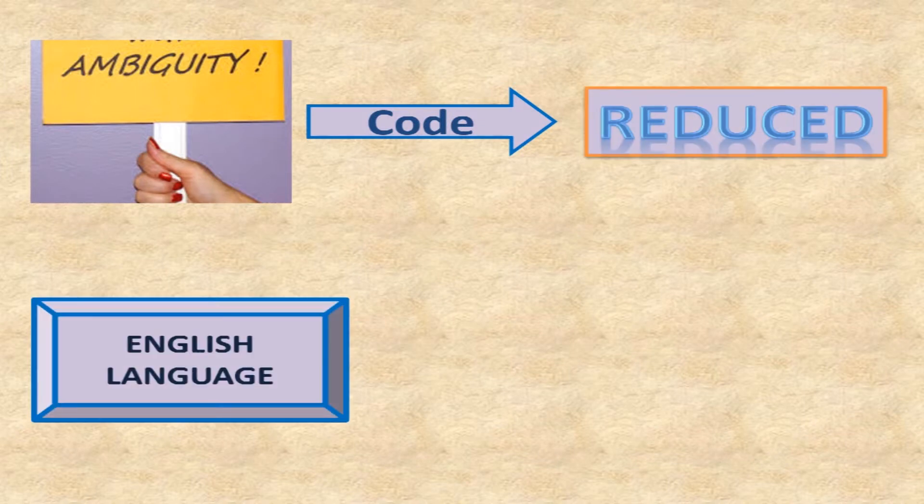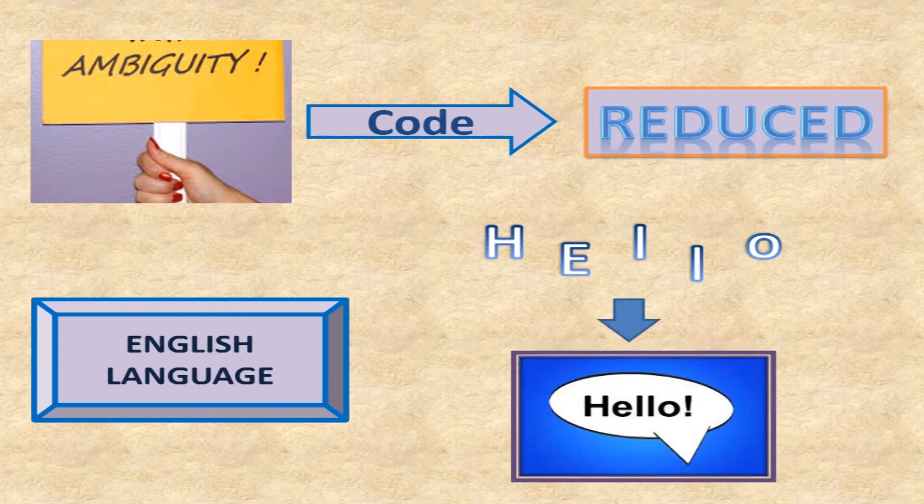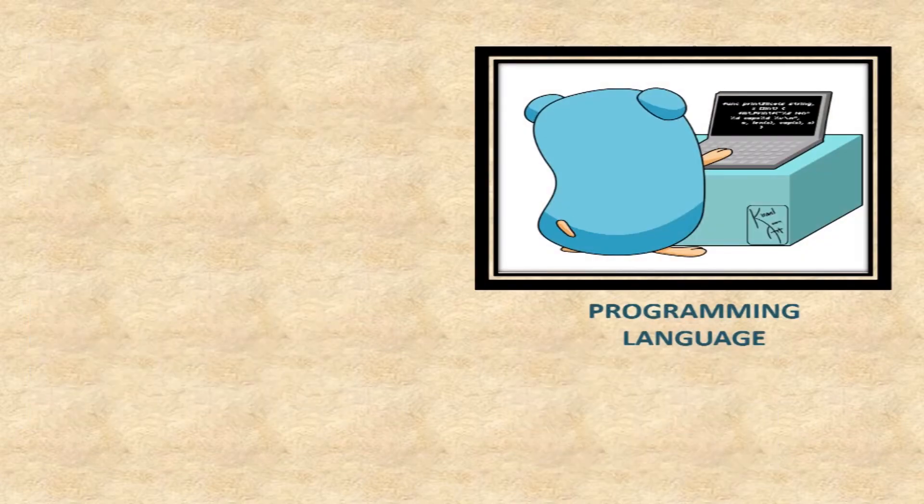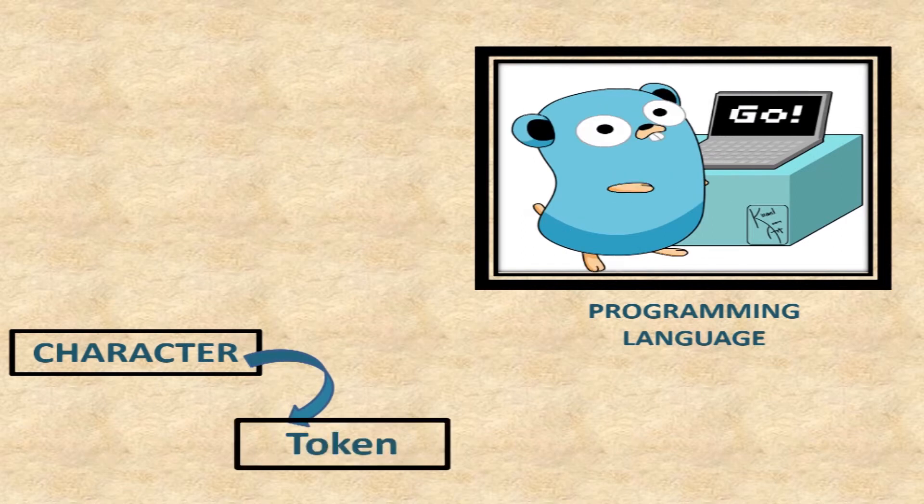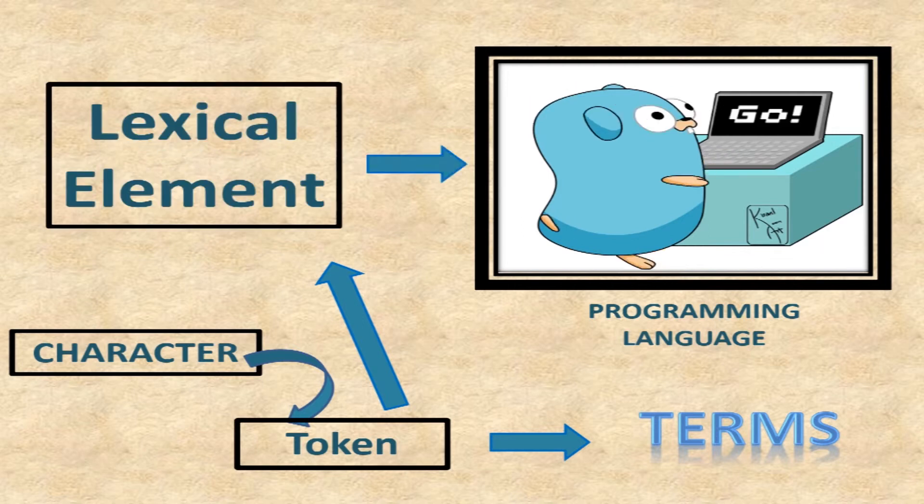In English language, the letters make up the words which then form sentences. Similarly, in programming languages characters form tokens which then form terms. Tokens are considered as the lexical elements of a language. The importance of semantics.